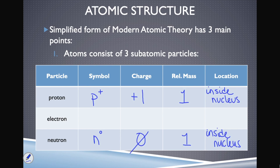Both protons and neutrons are found inside the nucleus of an atom. If we want to abbreviate electrons, it's an E with a little negative sign, because electrons have a charge of negative one. What is the relative mass of an electron? Compared to protons and neutrons, electrons are so small that we say they contribute zero to the whole mass of the atom, whereas each proton and neutron contributes one.